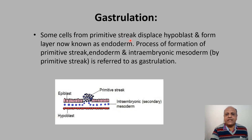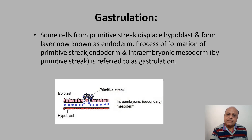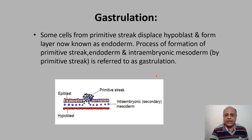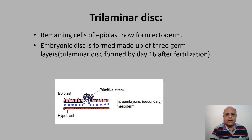Some cells from the primitive streak displace the hypoblast and form a layer known as endoderm. So intra-embryonic mesoderm is formed from the primitive streak, and then some primitive streak cells displace the hypoblast to form the endoderm. This process — the formation of the primitive streak, endoderm, and intra-embryonic mesoderm — is referred to as gastrulation.